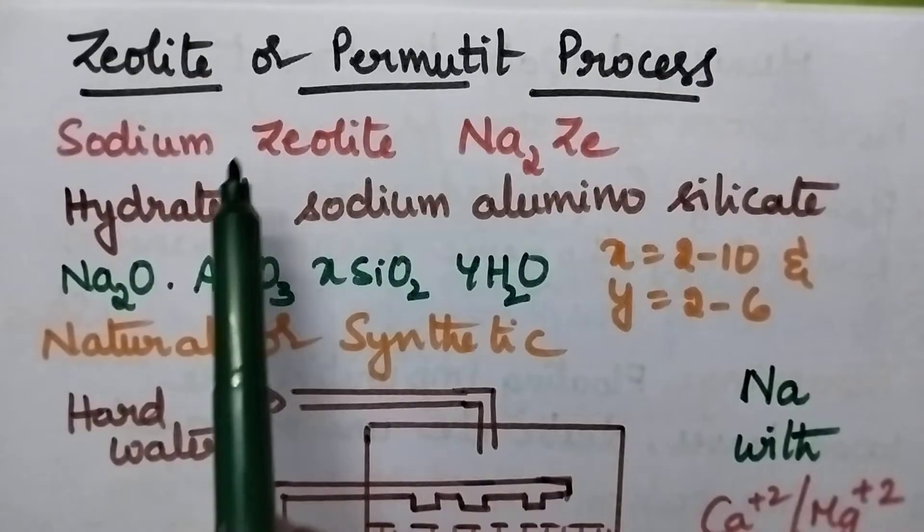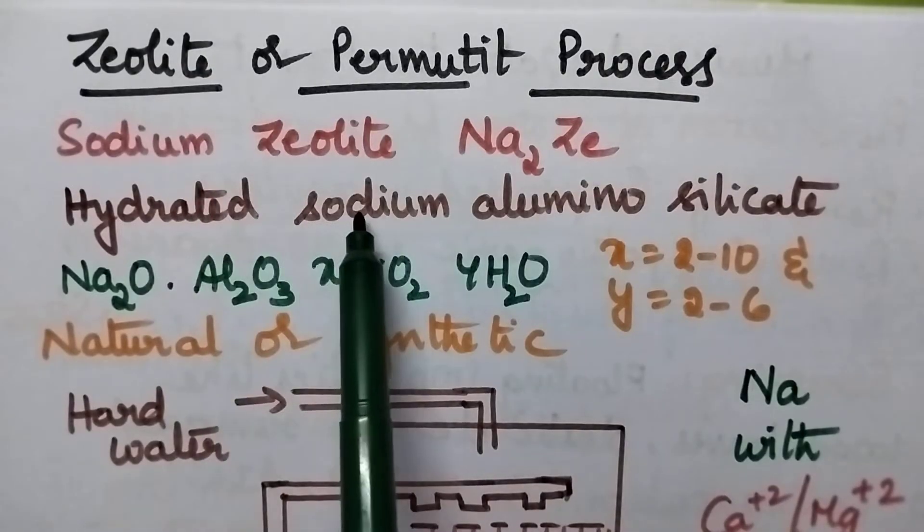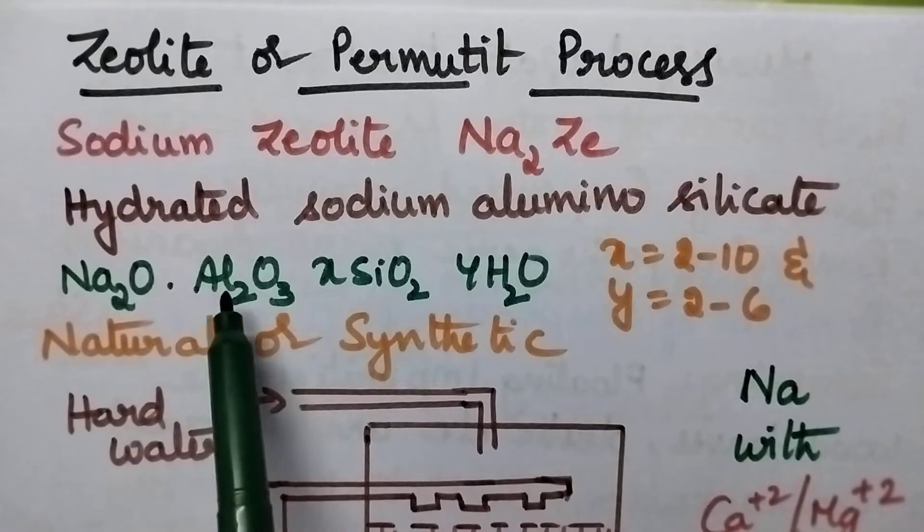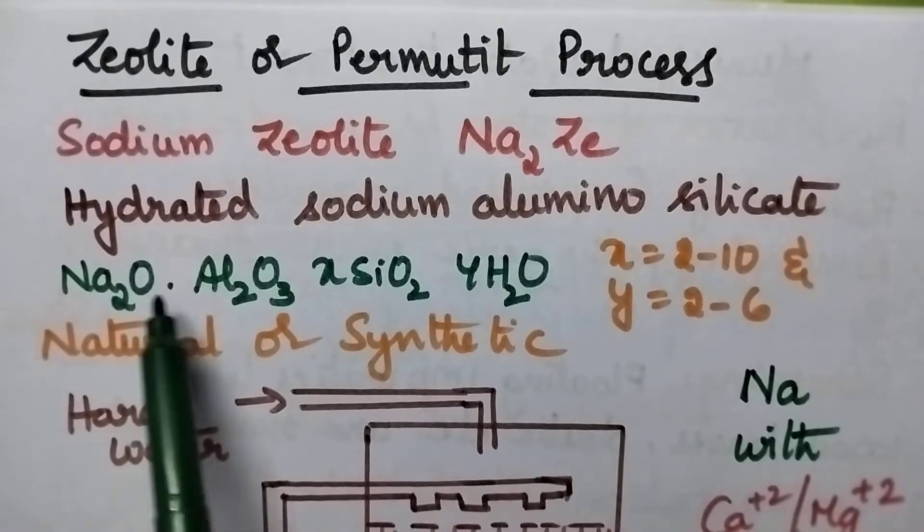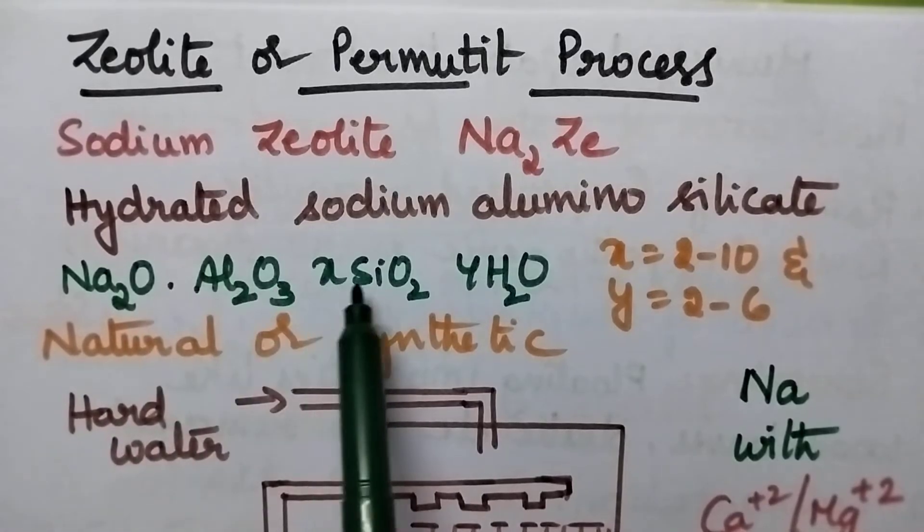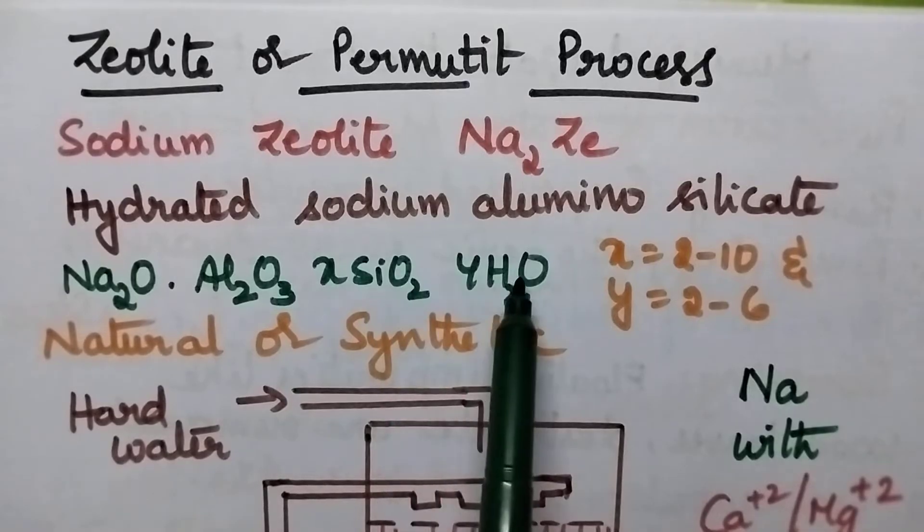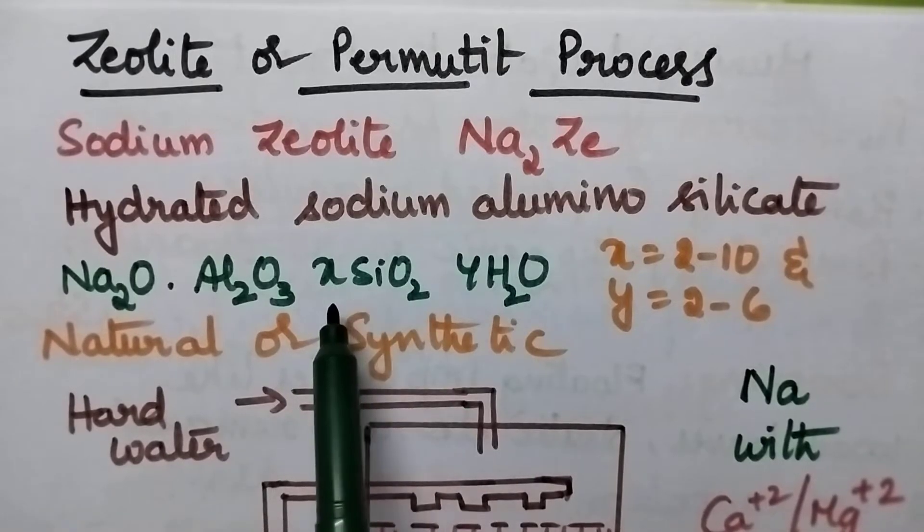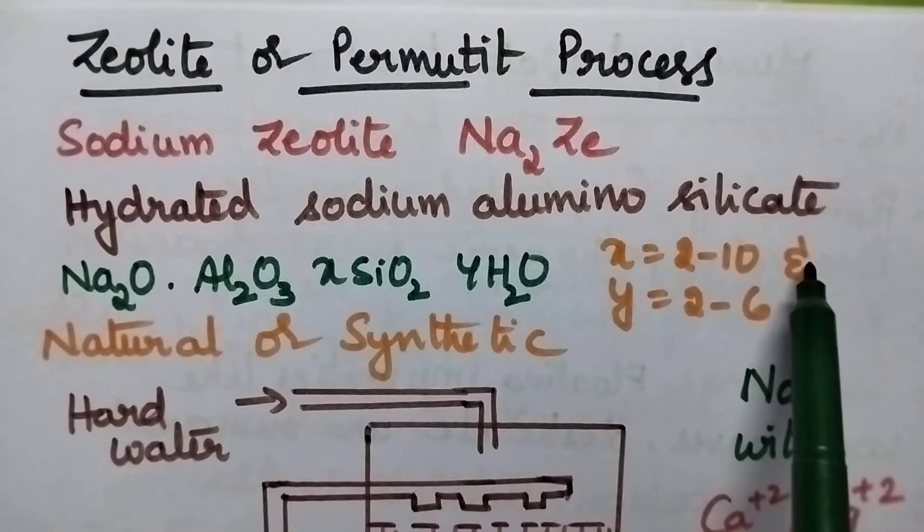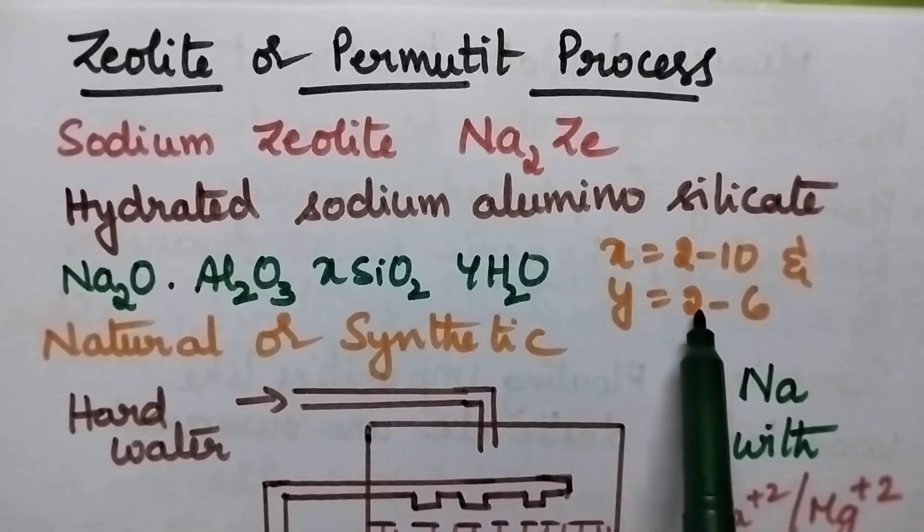Zeolite is chemically known as hydrated sodium alumino silicate and its formula is Na2O, Al2O3, XSiO2, YH2O where the value of X varies from 2 to 10 and the value of Y varies from 2 to 6.